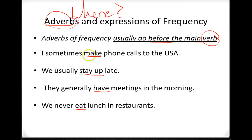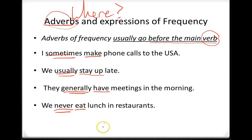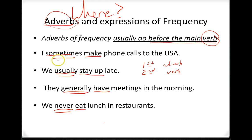Now let's look for the frequency adverbs. Where are those? We have 'sometimes,' 'usually,' 'generally,' and 'never.' What do you see? You can see that there are two lines here and one line here, so we see that first goes the frequency adverb and second is the verb. For example: 'I sometimes make phone calls to the USA.' 'We usually stay up late.' 'They generally have meetings in the morning.' 'We never eat lunch in restaurants.' So: first the adverb, then the verb.